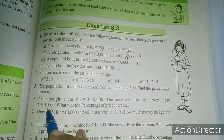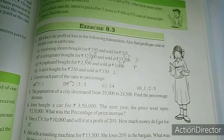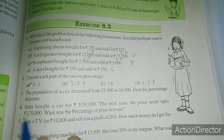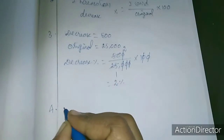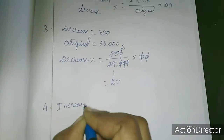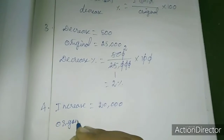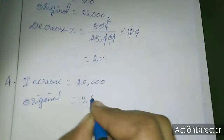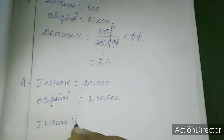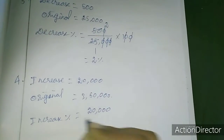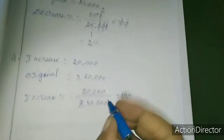The increase is 3,70,000 minus 3,50,000 equals 20,000. The original amount is 3,50,000. So increase percentage equals 20,000 divided by 3,50,000 into 100.